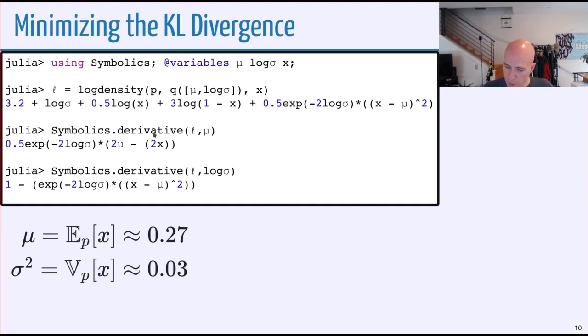Let's look at the derivative of this. This l is going to be like one of the terms where we have an infinite number of these terms in the expected value. Take the derivative with respect to mu, derivative with respect to log sigma. If we want to minimize this, we would just set these derivatives equal to zero.